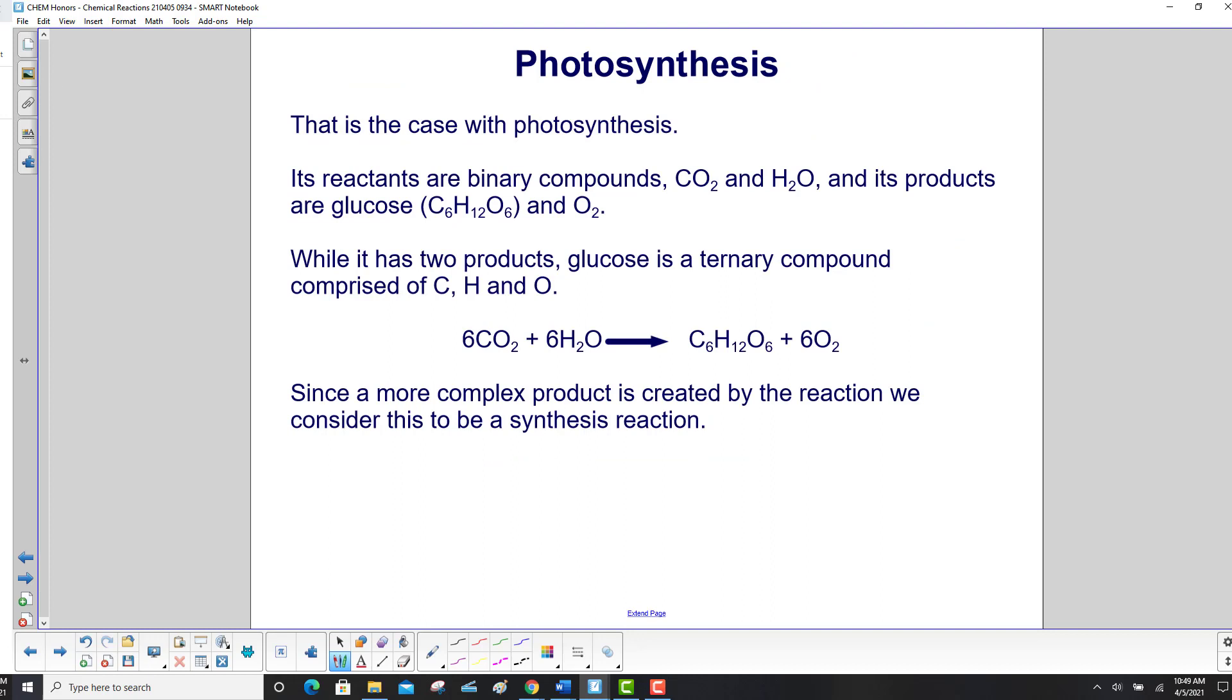This is the case with photosynthesis. Its reactants are binary compounds, carbon dioxide and water. And its products are glucose, C6H12O6, and oxygen. While it has two products, glucose is a ternary compound comprised of carbon, hydrogen, and oxygen. Since a more complex product is created by the reaction, we consider this to be a synthesis reaction.